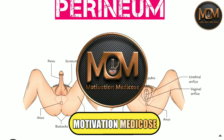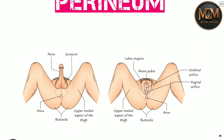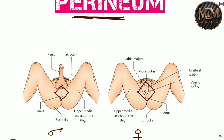Hello everyone, welcome to Motivational Medicos. My name is Pulkit Upta, and in this video we are going to talk about the Perineum. As you can see in the figure, this diamond-shaped structure highlighted here — whether in the male or female — this diamond-shaped structure is the perineum.